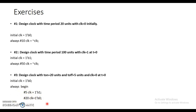So we have seen how behavioral modeling can be used to generate clock signals, and we have learned about the initial block and the always block. The initial block executes once, whereas the always block executes repeatedly until the simulation stops. I hope you have understood the basic concept of behavioral modeling in Verilog HDL and how the always construct can be used to generate clock signals without requiring any hardware.